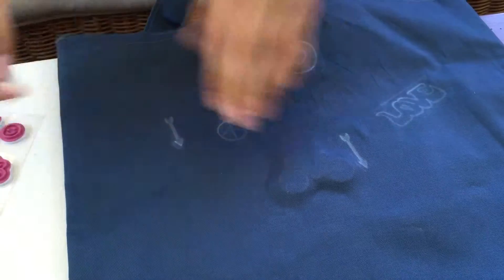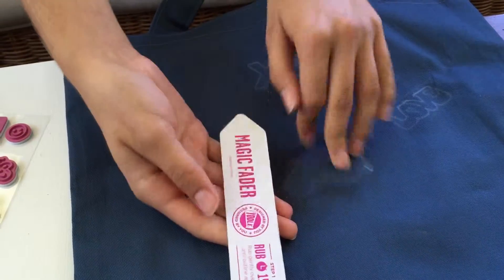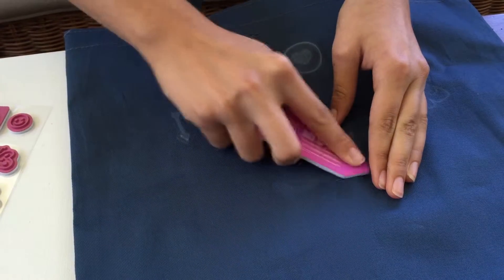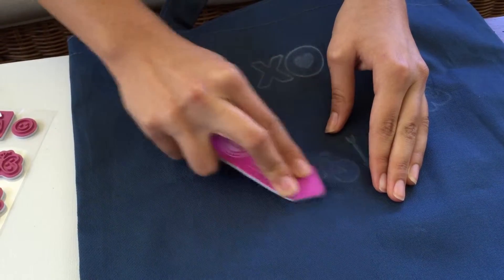And then we're going to take the magic fader. As you can see, there are two sides, the rough side and the smooth side. I'm going to start by rubbing the rough side down for about 15 seconds.